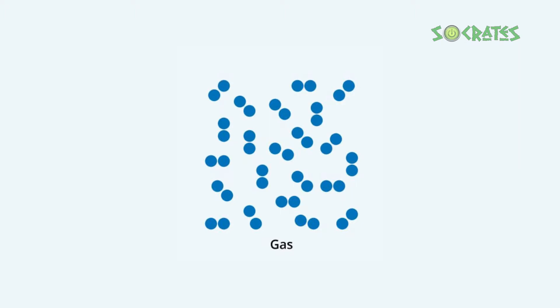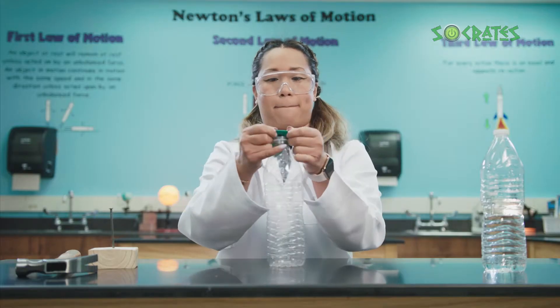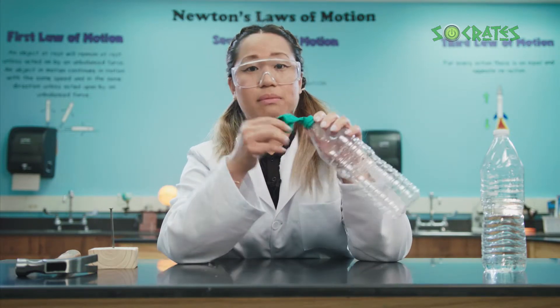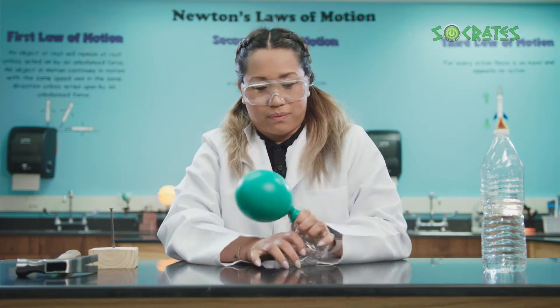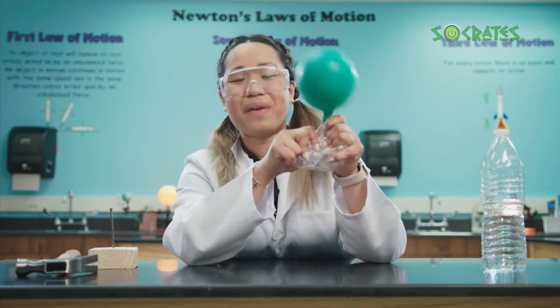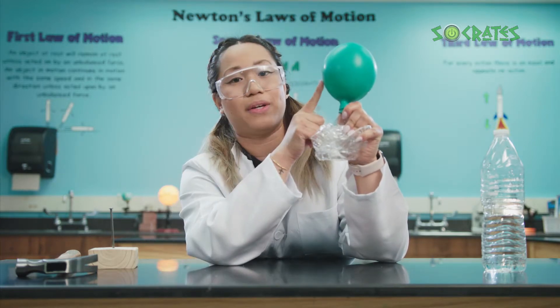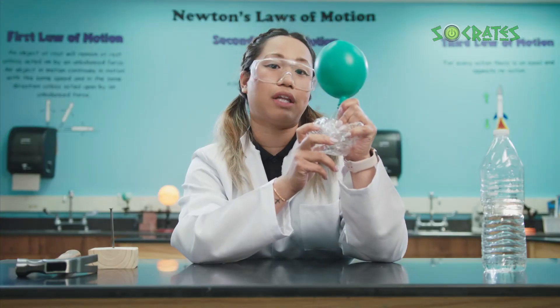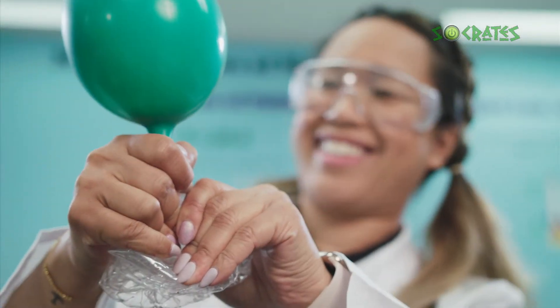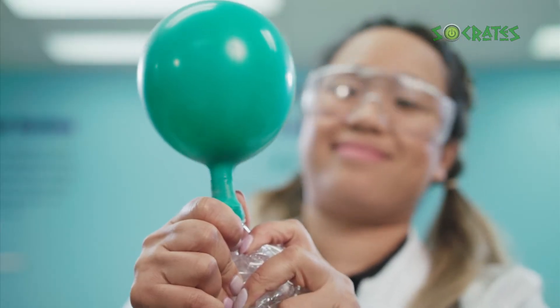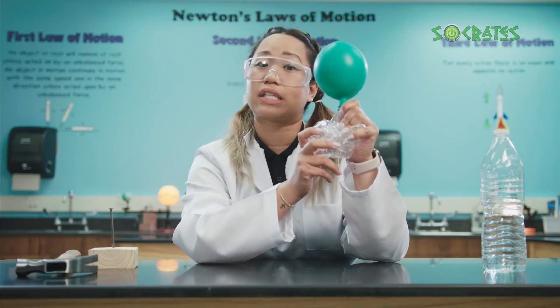Gas is made up of extremely tiny particles. Gas is very different from a solid. We can actually observe the air inside by using a balloon. When the bottle is squeezed, the gas molecules are forced from the bottle into the balloon. In a gas, the molecules and atoms are moving very freely, far away from each other. The particles of a gas are not very attracted to one another and just hit each other and bounce off.